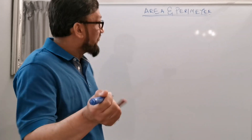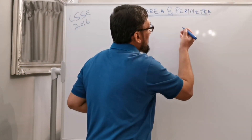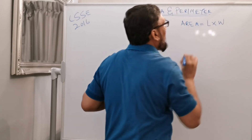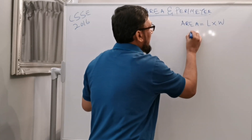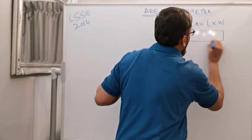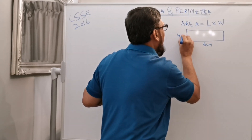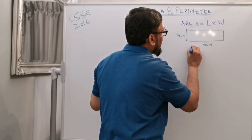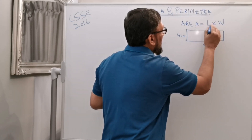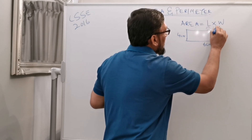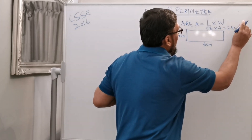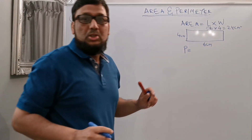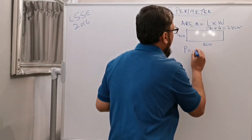Before going to solve this question, I'm going to refresh the topic of area and perimeter. Area means length times width. For example, a rectangle of 6 centimeters and 4 centimeters has an area of 4 times 6, which is 24 centimeters square.